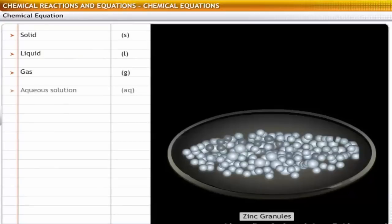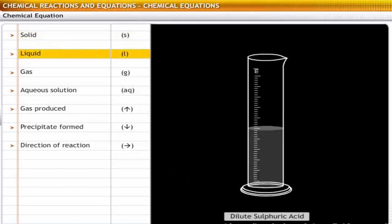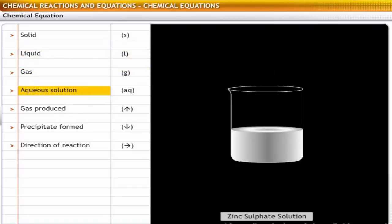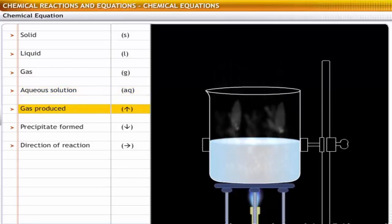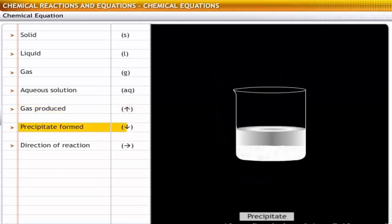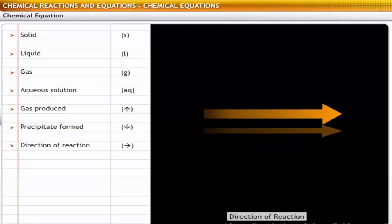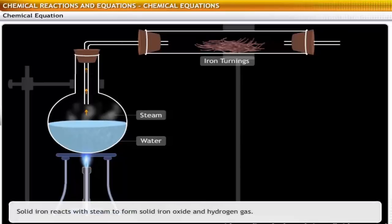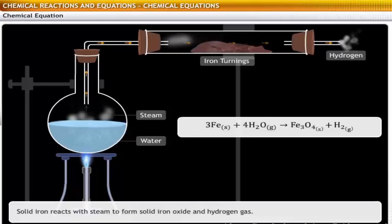In chemical equations, you denote a solid with S, a liquid with L, a gas with G, an aqueous solution as AQ, a gas produced with an arrow pointing upward, and a precipitate formed with an arrow pointing downward. The reactants and products are separated with an arrow which points in the direction of the reaction. Let us consider the reaction of iron with steam. Solid iron reacts with steam to form solid iron oxide and hydrogen gas. This reaction is represented as shown.